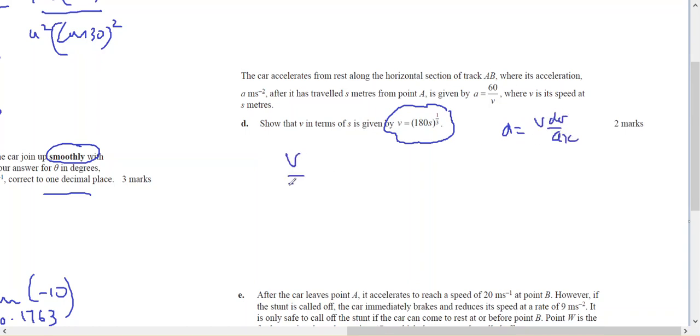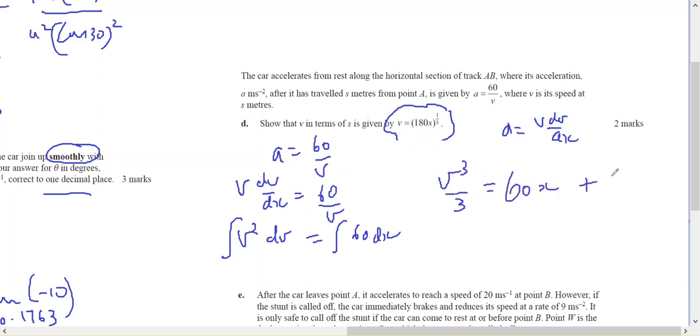Therefore v dv equals 60 dx, which means v cubed on 3 equals 60x plus some constant c. I know that the velocity equals 0 when x equals 0, therefore c equals 0. V cubed equals 180x, v equals 180x to the one third. And that's exactly what I wanted to show.